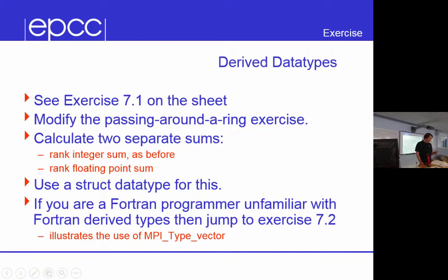If you initialize them and then send them round, you'll have to create an MPI type to match the compound type and use that in your send and receive routines. If you're a Fortran programmer and you've never used Fortran types,